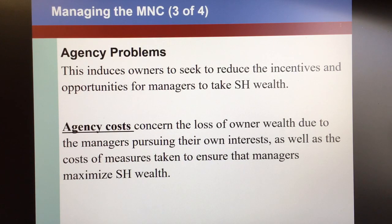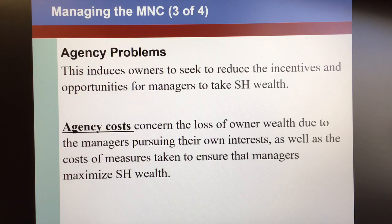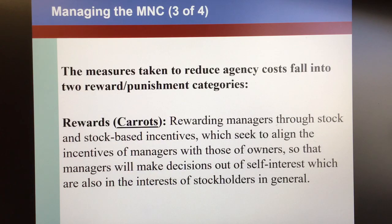Agency costs concern the loss of wealth to owners because of managers pursuing their own self-interest, as well as the cost of measures taken to ensure that managers maximize shareholder wealth. For example, selecting a real estate agent requires time and effort doing research online — that has a cost even if not directly financial. In the modern corporation the incentive is even greater, and owners take measures to monitor agent activity so as to reduce those costs. The measures taken to reduce agency costs generally fall into two categories: reward and punishment.